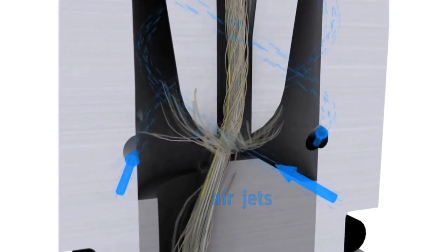The four airjets in the twist element create a whirlwind around the spinning tip by means of pressured air.